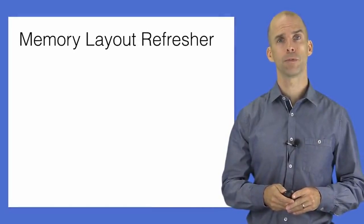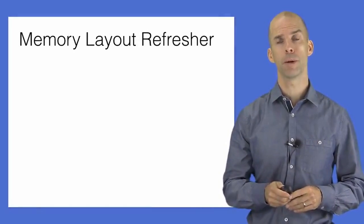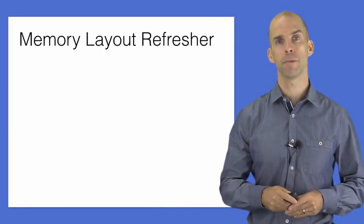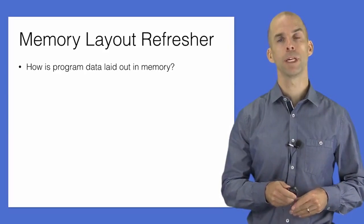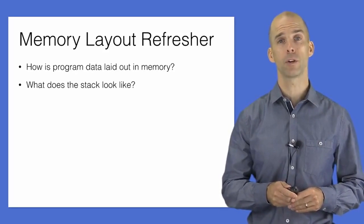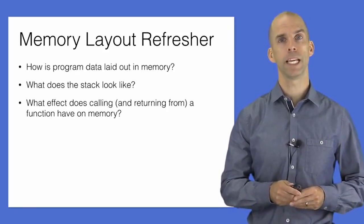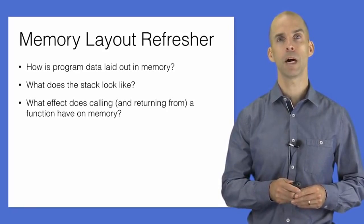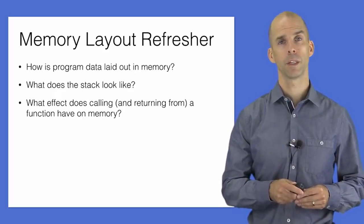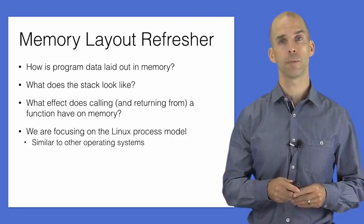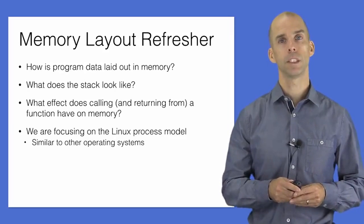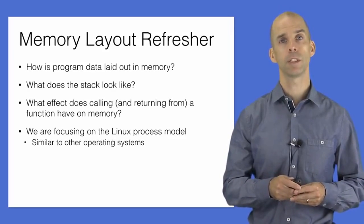Before discussing how buffer overflows work, we need to review how programs run on a modern computer — particularly how they are laid out in memory. We will consider where program code and data are located in memory, examine the call stack and how it stores arguments and local variables when functions are called, and look at the metadata stored among program data. The discussion focuses on the Linux operating system process model running on an Intel x86 32- or 64-bit processor; while details differ across systems, the concepts are very similar.